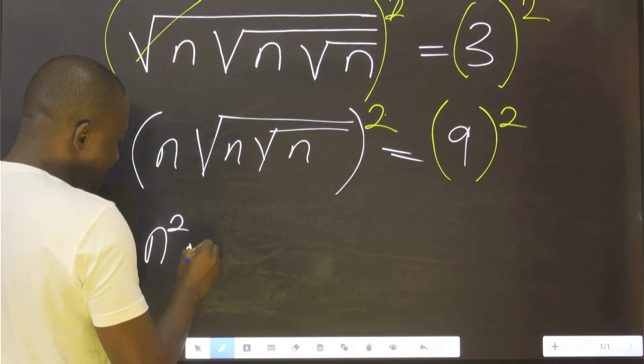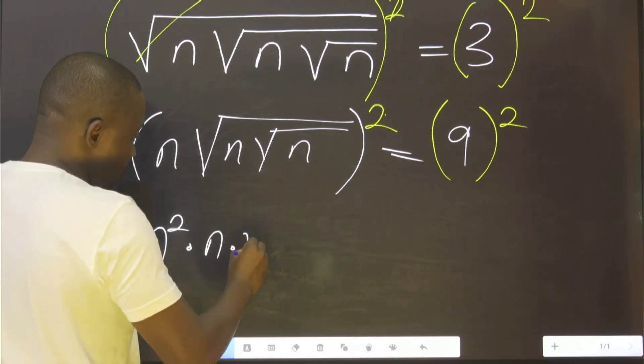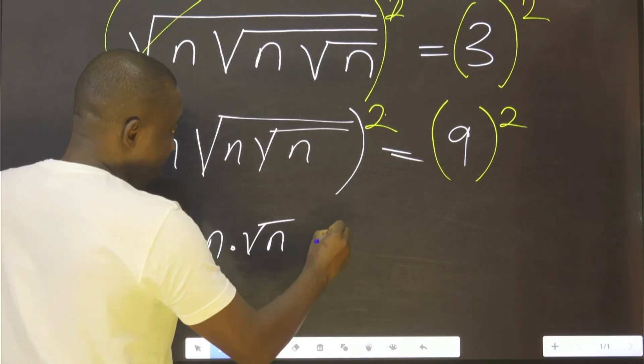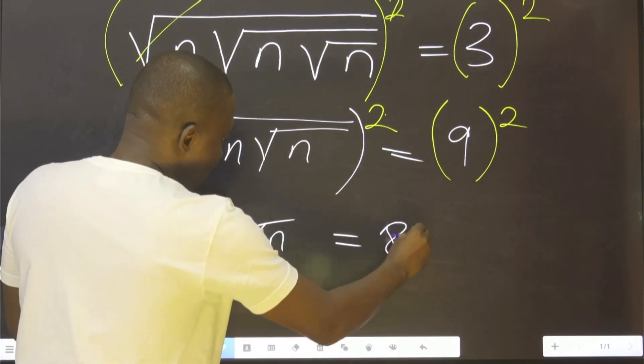It means multiplied by n, multiplied by the square root of n, equal to 81.